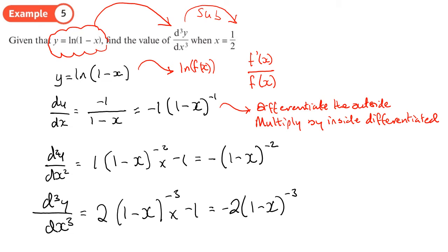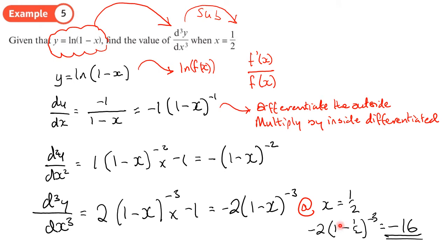Now all we need to do is substitute x = 1/2 into that. That gives us −2 · (1 − 1/2)^(−3), so basically −2 · (1/2)^(−3). Just quickly doing it on the calculator, that gives −16 as the final answer, because (1/2)^(−3) is the same as 2³, which is 8, times by −2, which gives you −16.